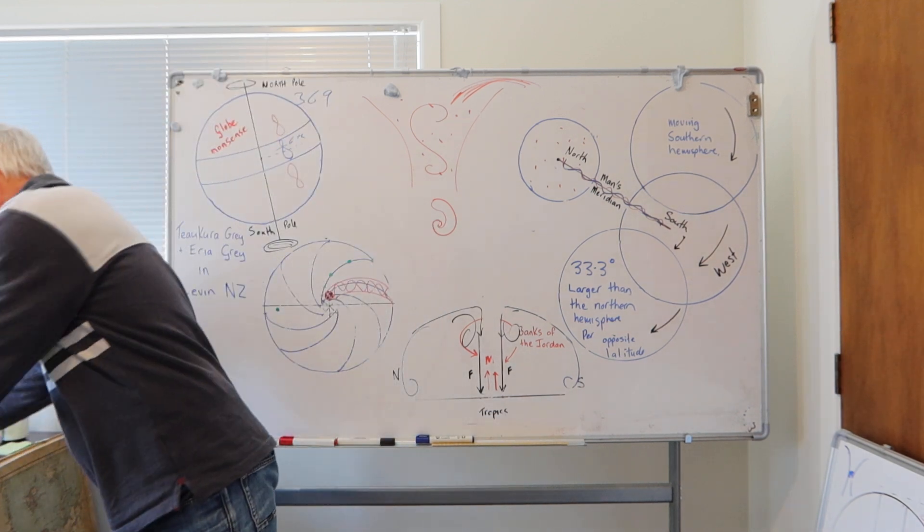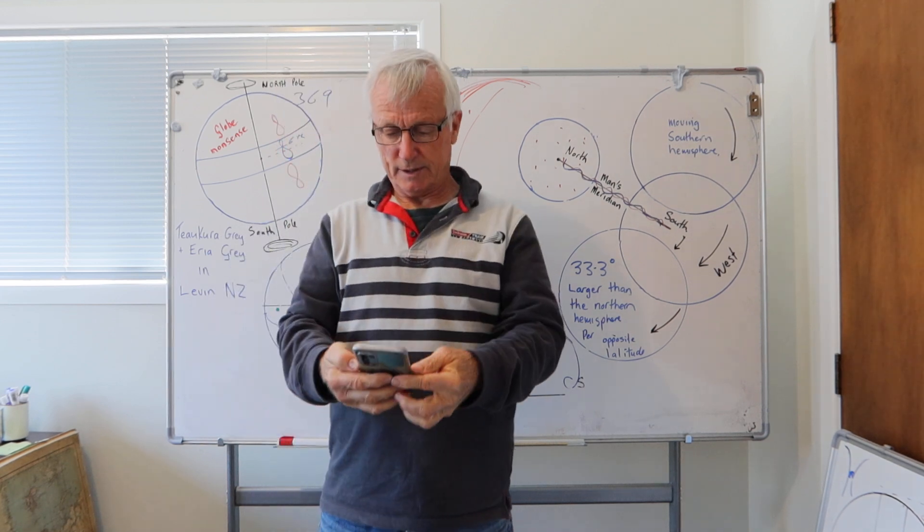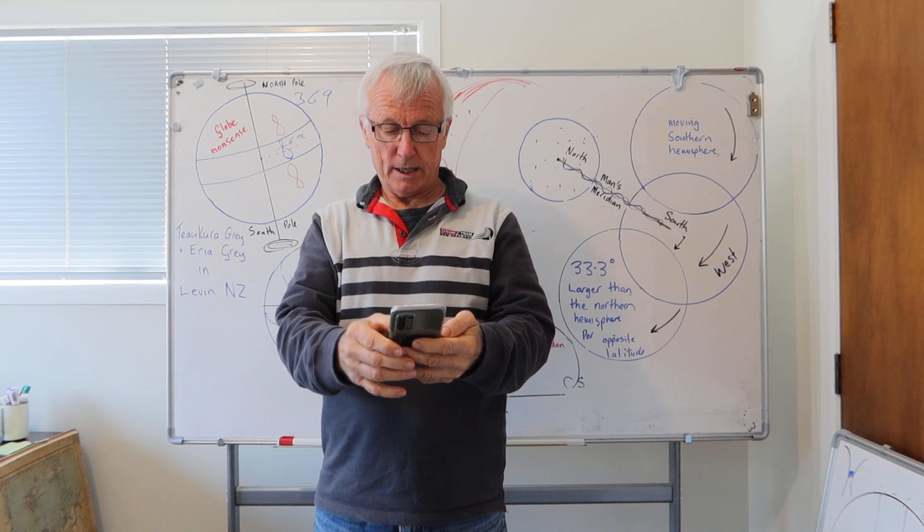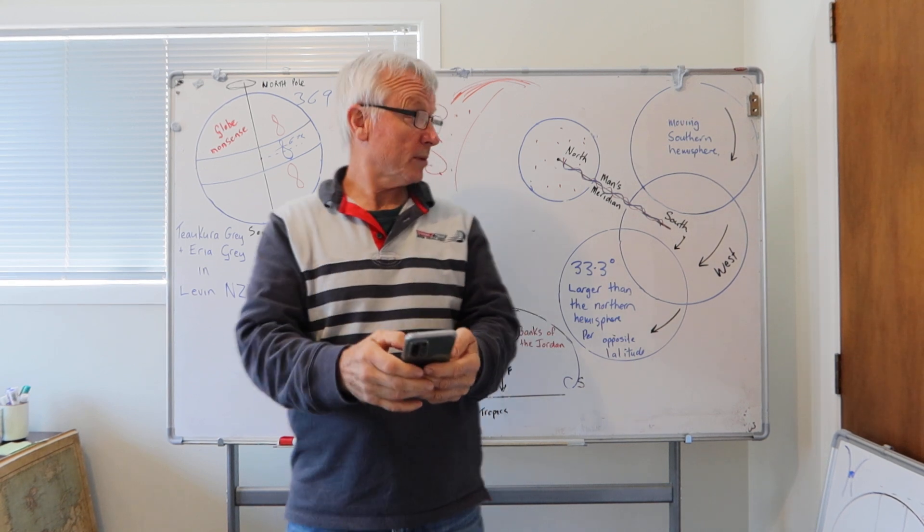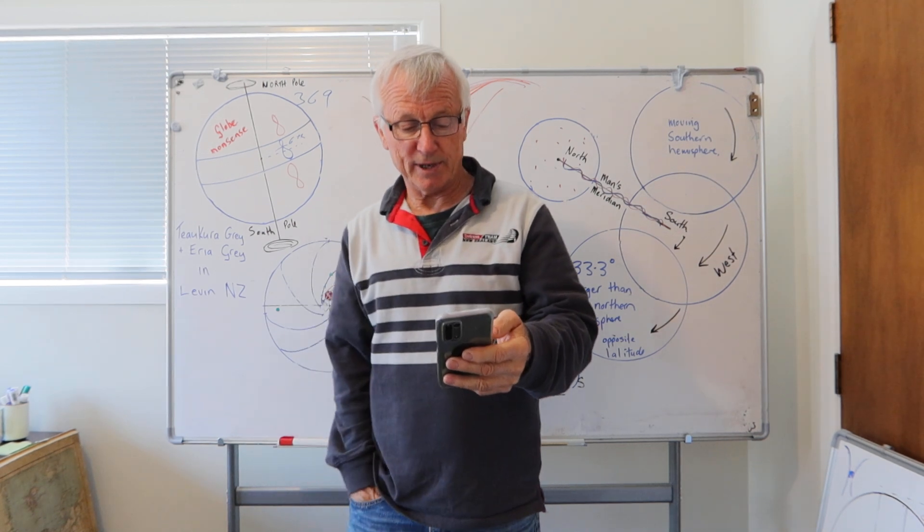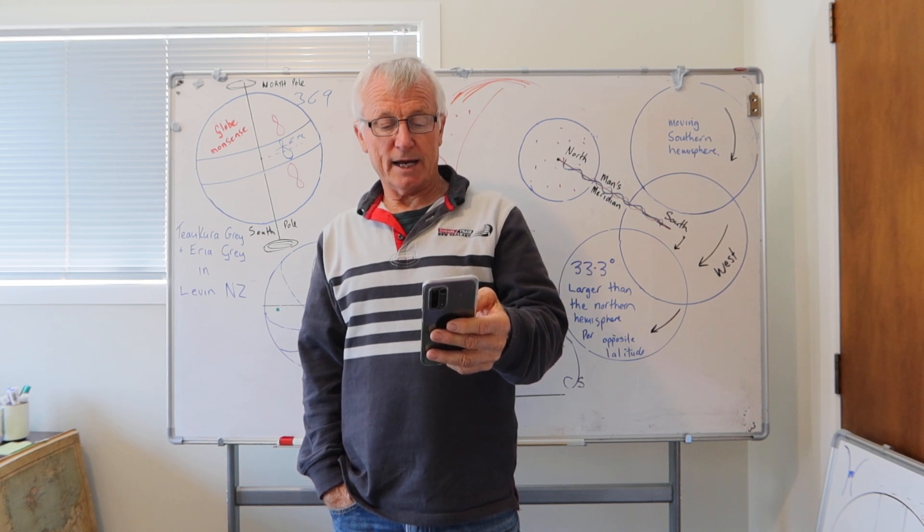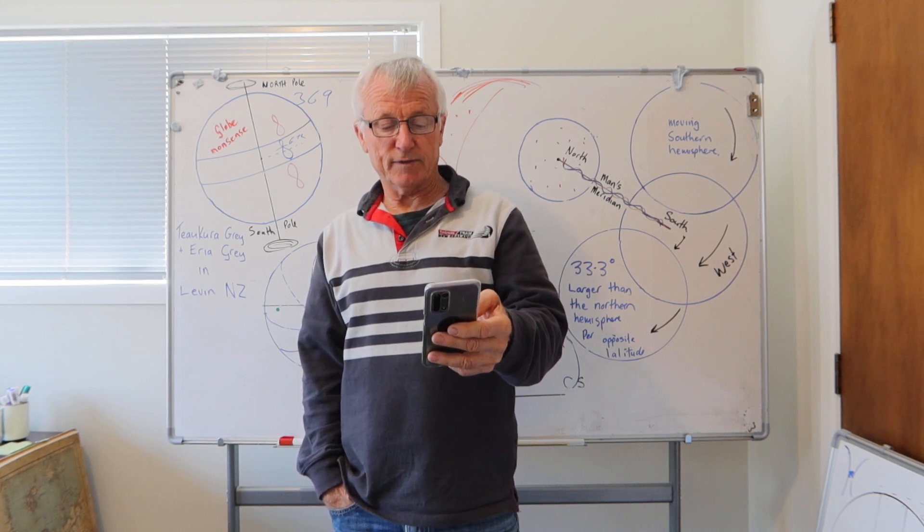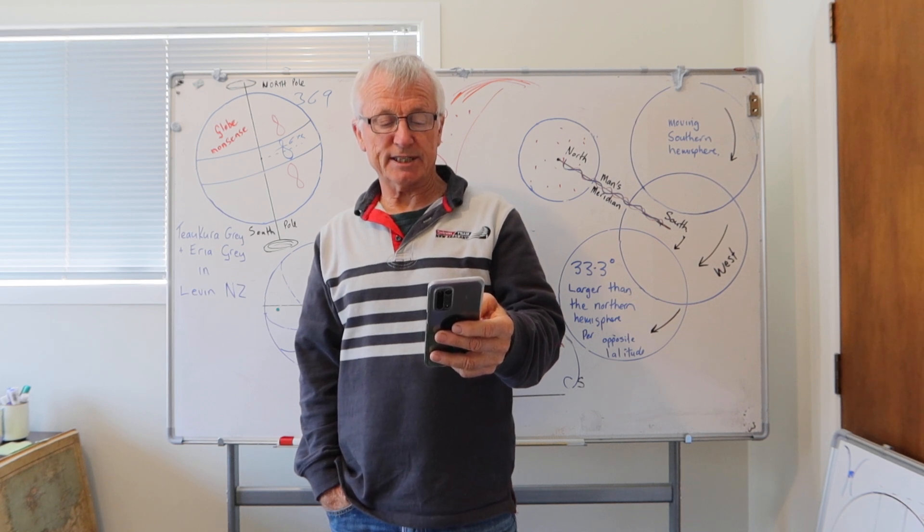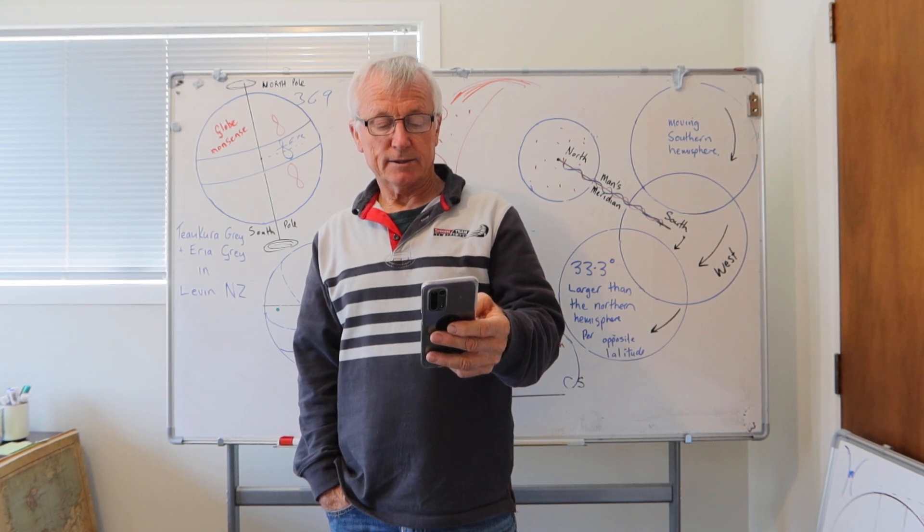This is what I put on my Facebook. Now I can't prove it but I'm the first man to talk about it. Somehow I can probably prove it one day. World first 2023 - my name announced that the southern stars are a mirrored reflection of the northern stars but in a 33.3 degree larger expanse.